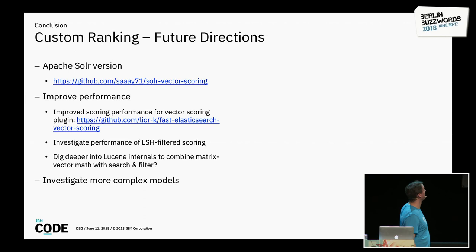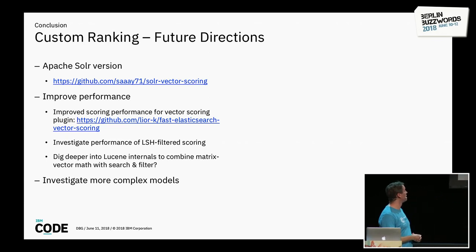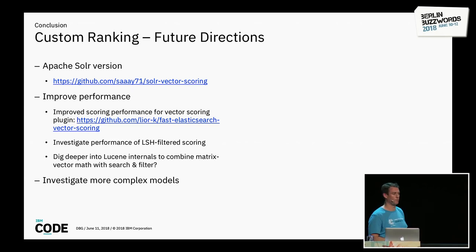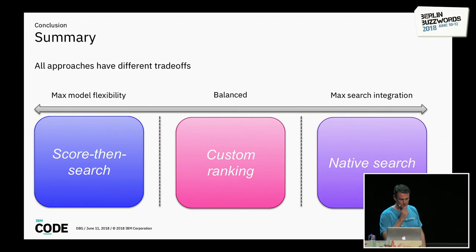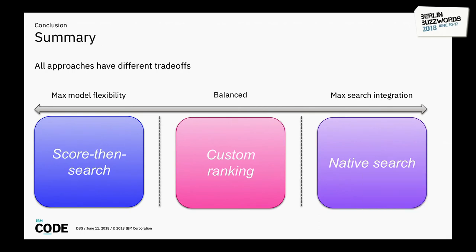In summary, there's a spectrum from maximum model flexibility to maximum search integration. Score then search sits at one end, native search at the other, and custom ranking sits in the middle. Each has different trade-offs — for custom ranking, a Solr version with claimed 10x performance improvement is now available, and there's potential to further optimize via Lucene internals for batched matrix-vector math. The right choice depends on your model and architecture.